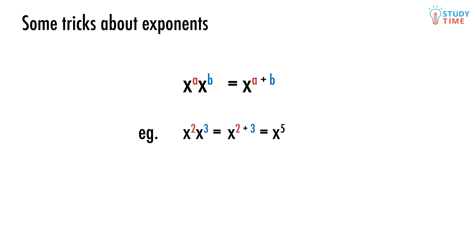This is why x times x equals x squared, because it's secretly x to the power of 1 times x to the power of 1, which is x to the power of 1 plus 1, which is x to the power of 2.